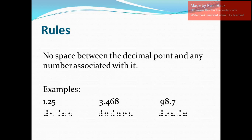Next example, we have 3.468. In Nemeth, we write the numeric indicator, the digit 3, the decimal point — that's dots 4 and 6 — and then the digits 4, 6, and 8. Again, there is no space before the decimal point and no space after the decimal point.